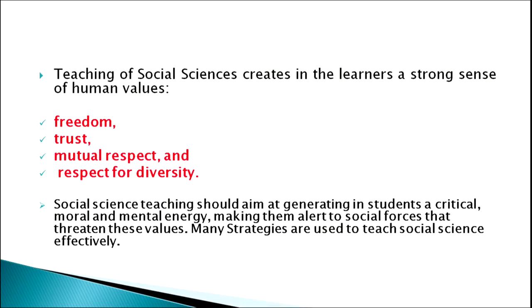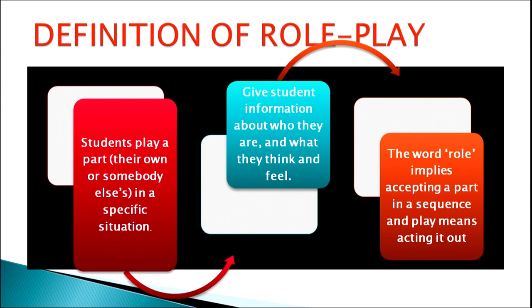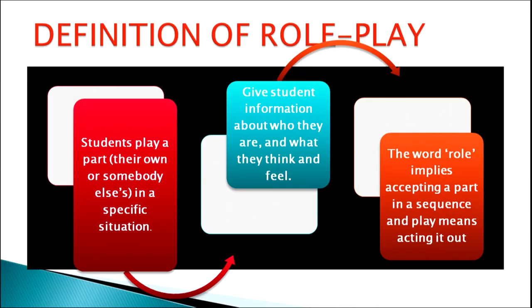Social science teaching should aim at generating in students critical moral and mental energy, making them alert to social forces that threaten these values. Many strategies are used to teach social science effectively. Role play is one of the major strategies. In role play, students play a part — either their own or somebody else's — in a specific situation. The student is given information about who they are, what they think, and what they feel.